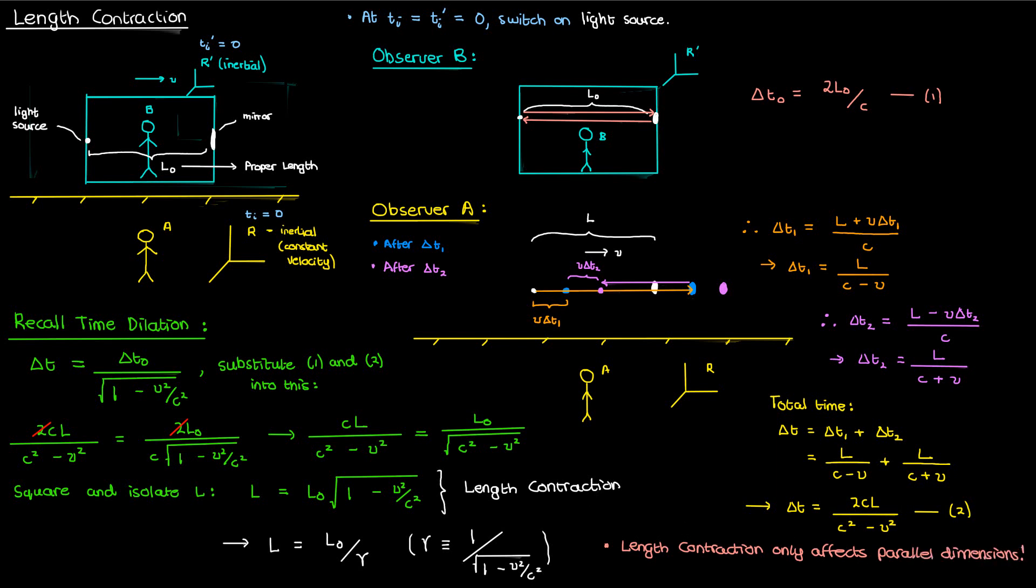If I have a stationary observer A in a reference frame R and a diagonal object traveling horizontally at velocity V in a reference frame R', then according to observer A only the horizontal component of the length will be contracted relative to the proper length. The vertical component, the component that's perpendicular to the velocity, will be unaffected.